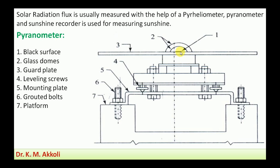Whatever radiation falls on the black surface — which is a thermopile — it generates an EMF. One junction of the thermopile is kept at the hot point, and another is kept in the shading. The EMF produced causes current to flow, and that current is measured, which is a measure of the radiation. When all beam and diffuse radiation is received, that measures global radiation; when only diffuse radiation falls on the thermopile, that measures diffuse radiation.